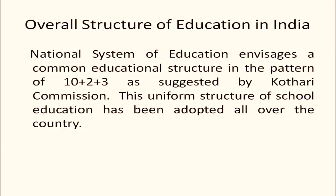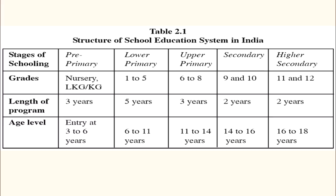Now we have the 10 plus 2 plus 3 system where 10 comprises 5 years of primary, 3 years of upper primary, and then 9th and 10th as secondary; plus 2 is 11th and 12th. We have also included pre-primary, that is, prior to 6 years of age the child goes to pre-primary classes — nursery, LKG, and UKG — where the student is prepared for formal school and given training in school readiness.